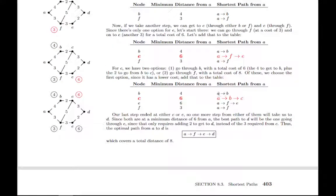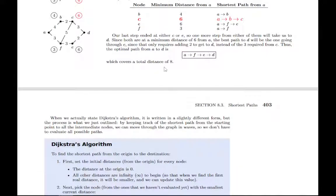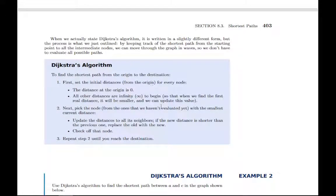You should read carefully through the description and go through each step to see where the numbers come from. The algorithm starts with the initial distances from your starting point: distance 0 at the starting point itself, and infinity listed for all others since we haven't visited them yet. The repeated step — notice step three is to repeat step two — is to pick whichever unvisited node has the smallest current distance, then update the distances to its neighbors. You go out one step forward with its neighbors and keep going until you finish.